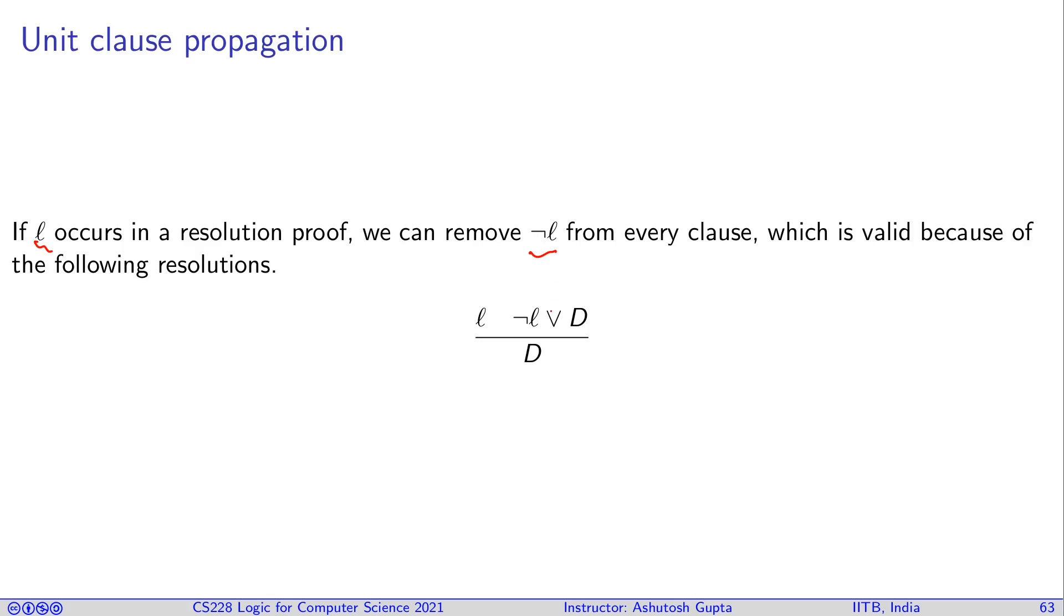you can simply say this and not L has to be removed because it is clearly false. You cannot make this clause true. So, therefore, you start operating with D.